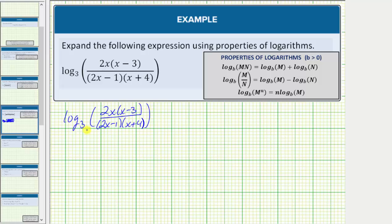Notice how the argument of the logarithm is already factored completely and nothing simplifies. To begin expanding, we will first use the quotient property of logarithms shown here, where log base b of m divided by n equals log base b of m minus log base b of n.